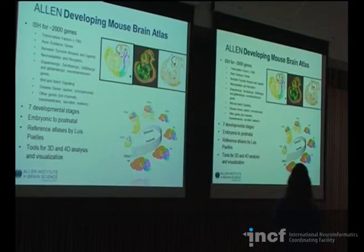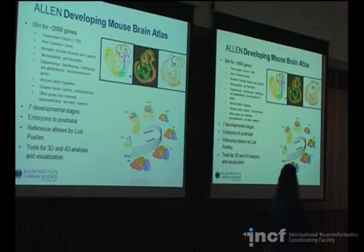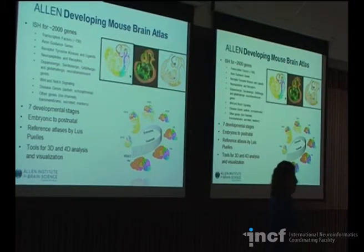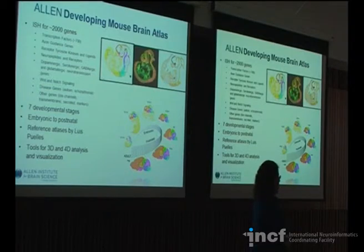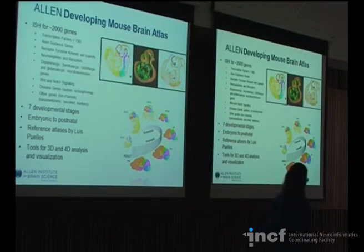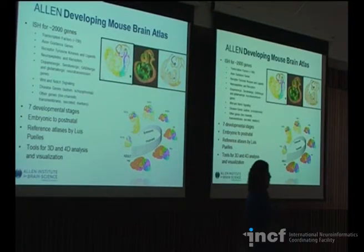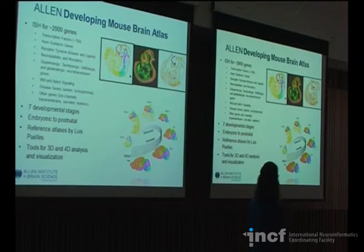This reference atlas was annotated and drawn by Luis Puehles, who's one of the foremost people in the world right now as far as looking at development of the mammalian nervous system. He's very much a proponent of the prosomeric model that we talked about, so this atlas is done in that way.